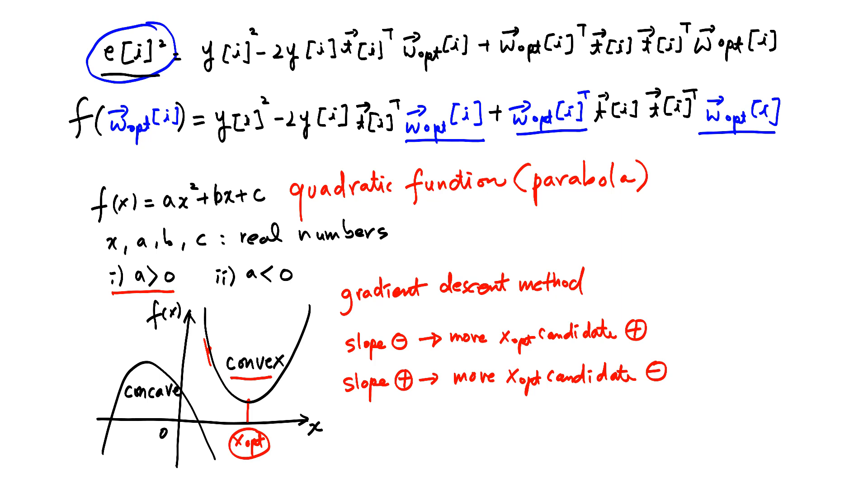If you go back to our function of w-opt i, we know that this is a vector, not a single value. But let's consider this vector as x, just like x here. Then this becomes x.